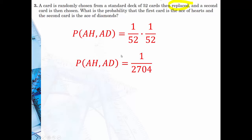This next problem: a card is randomly chosen from a standard deck of 52 cards, then replaced, and a second card is chosen. So that means I'm putting the card back. What's the probability the first card is ace of hearts and the second card is the ace of diamonds? There are 52 cards in the deck. Only one is the ace of hearts and only one is the ace of diamonds. So I'm going to have one out of 52 and one out of 52. Now if I hadn't replaced it, this 52 would have changed to 51. But since I did, the answer is one over 2,704.